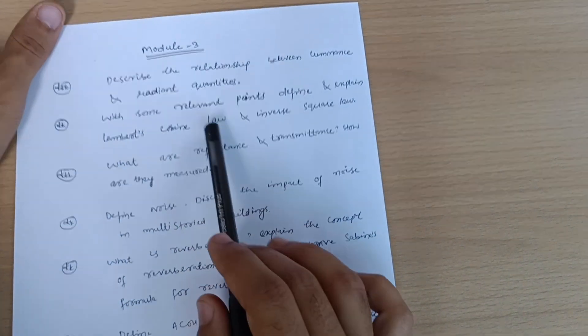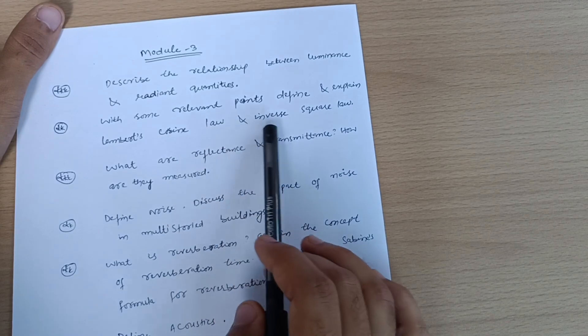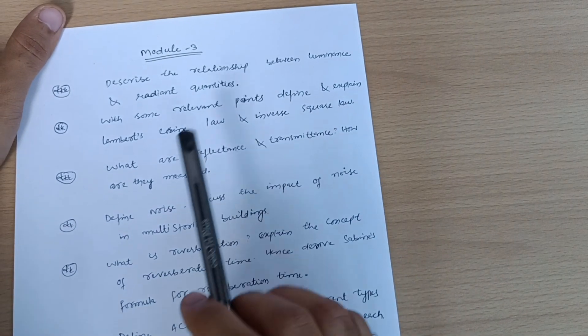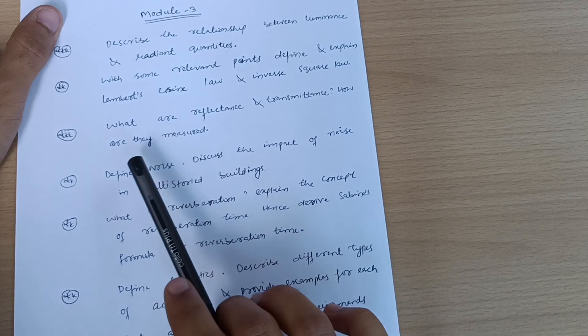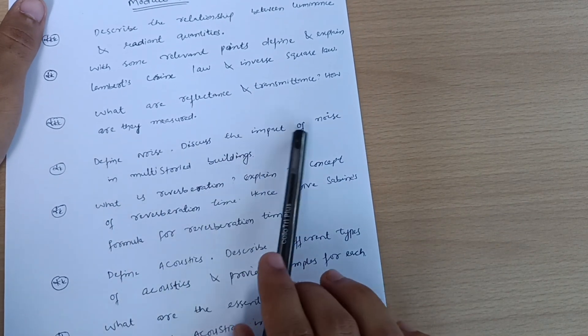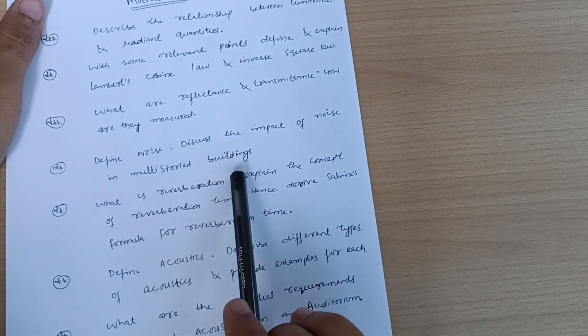Describe the relationship between luminance and radiant quantities with some relevant points. Define and explain Lambert's cosine law and inverse square law. What are reflectance and transmittance? How are they measured? Here we have the possibility: define noise, discuss the impact of noise in multi-storied buildings.